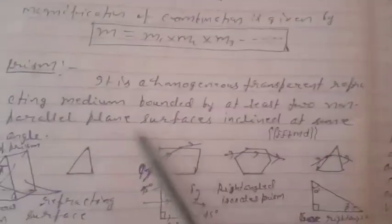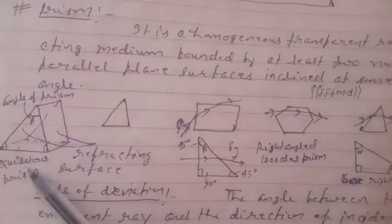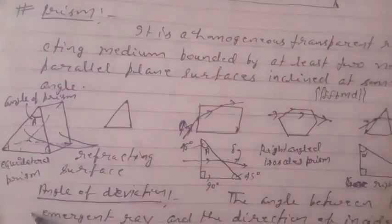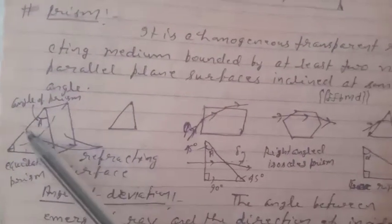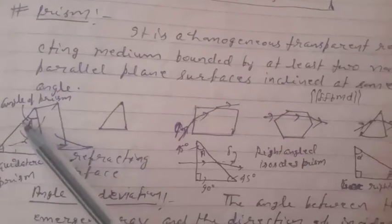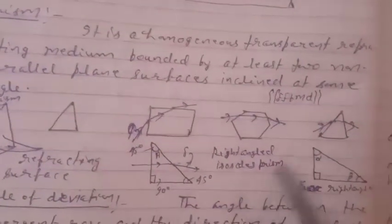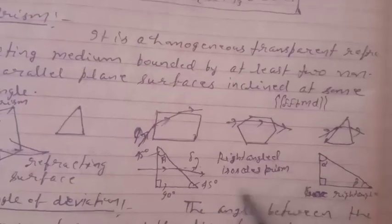A prism is a homogeneous transparent refractive medium bounded by at least two non-parallel surfaces inclined at some angle. This is a lateral prism because all angles are the same. The refractive surfaces are those on which light is incident and through which it passes — the angle between them is called the angle of prism. There may be different types of prisms.